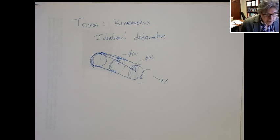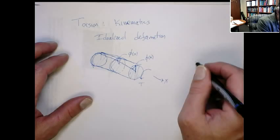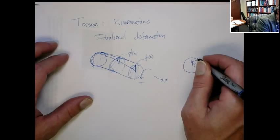Now, a couple of other things — just some terminology here. We're also going to want to deal with the radial distance. The book uses rho to denote the radial distance from the center. And the outer radius, we call it c. So that's the outer radius.